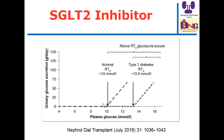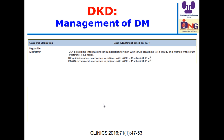Regarding metformin pharmacokinetics: the prescribing information states metformin is contraindicated if serum creatinine is above 1.5 mg/dL in men or 1.4 mg/dL in women. UK guidelines allow metformin in patients with estimated GFR above 30 ml/min, to be avoided below 30 ml/min. If feasible, it is better to start with metformin given its low cost, but exercise caution in cases with unstable GFR to avoid accumulation, which may lead to acute problems such as lactic acidosis.